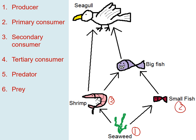Next, we label the secondary consumers. The seagull eats the shrimp, making it a secondary consumer, and the big fish eats the shrimp and small fish, so that's also a secondary consumer. In terms of a tertiary consumer, the seagull also eats the big fish — so we have four steps: seaweed, then shrimp or small fish, then big fish, then seagull — making the seagull the tertiary consumer too.